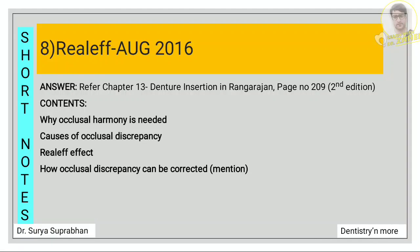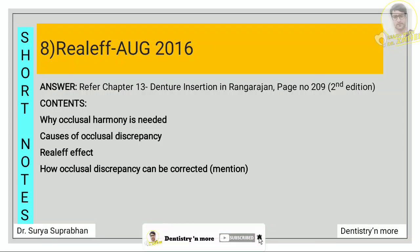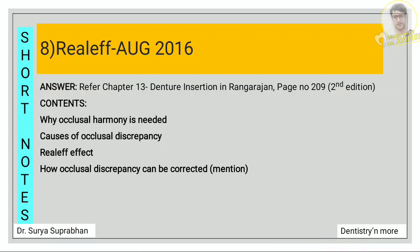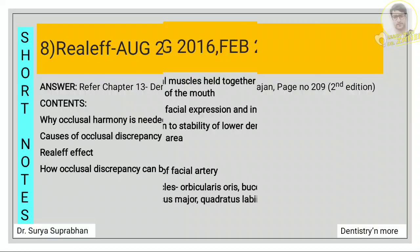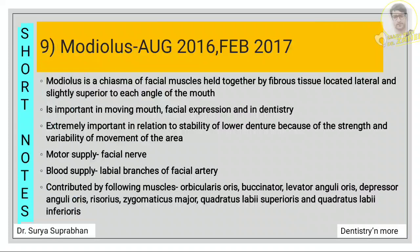For real life effect, refer chapter 13, page number 209. First write why occlusal harmony is needed, then write about the causes of occlusal discrepancy, then write about the real life effect, and then mention how these occlusal discrepancies can be corrected.